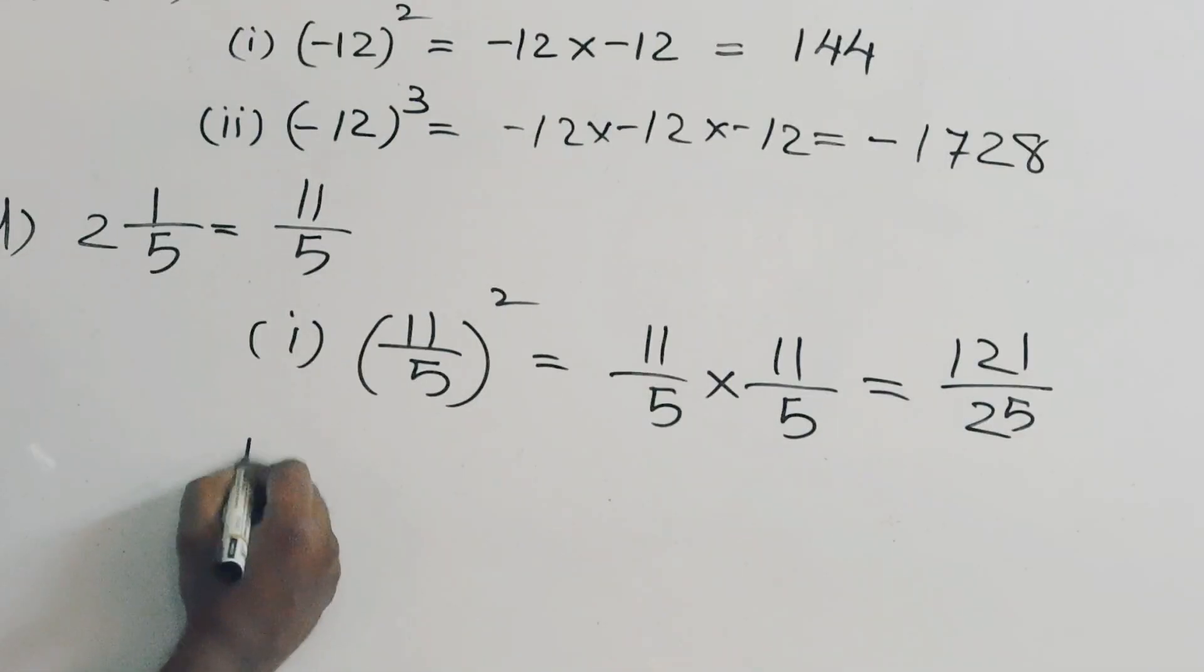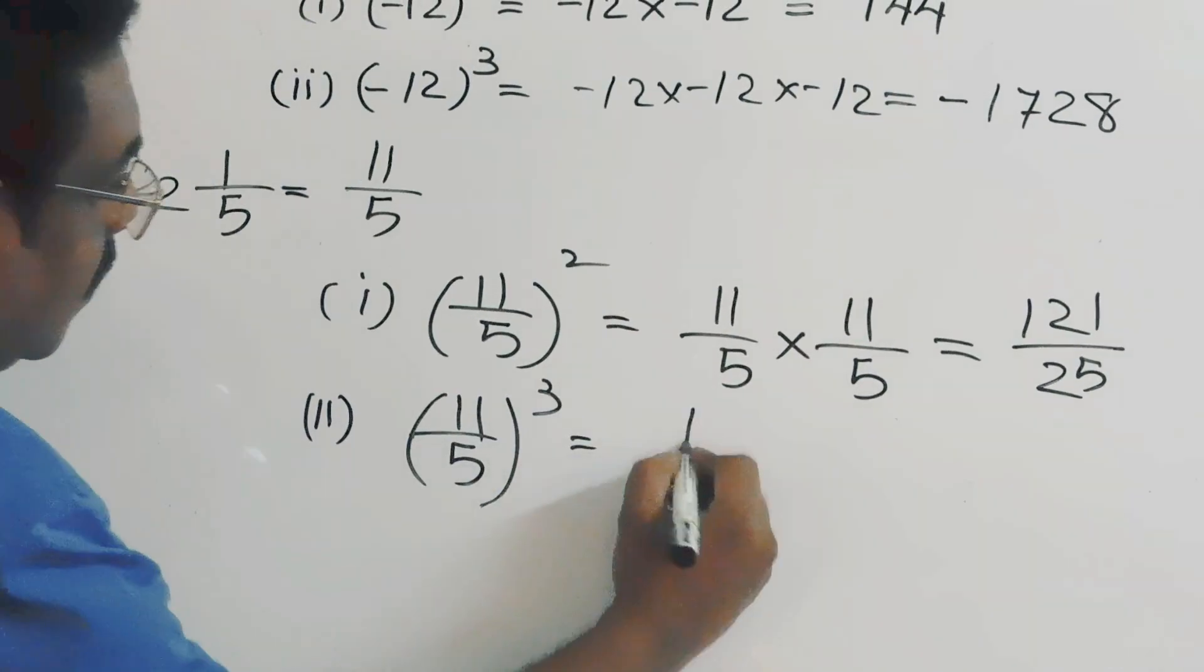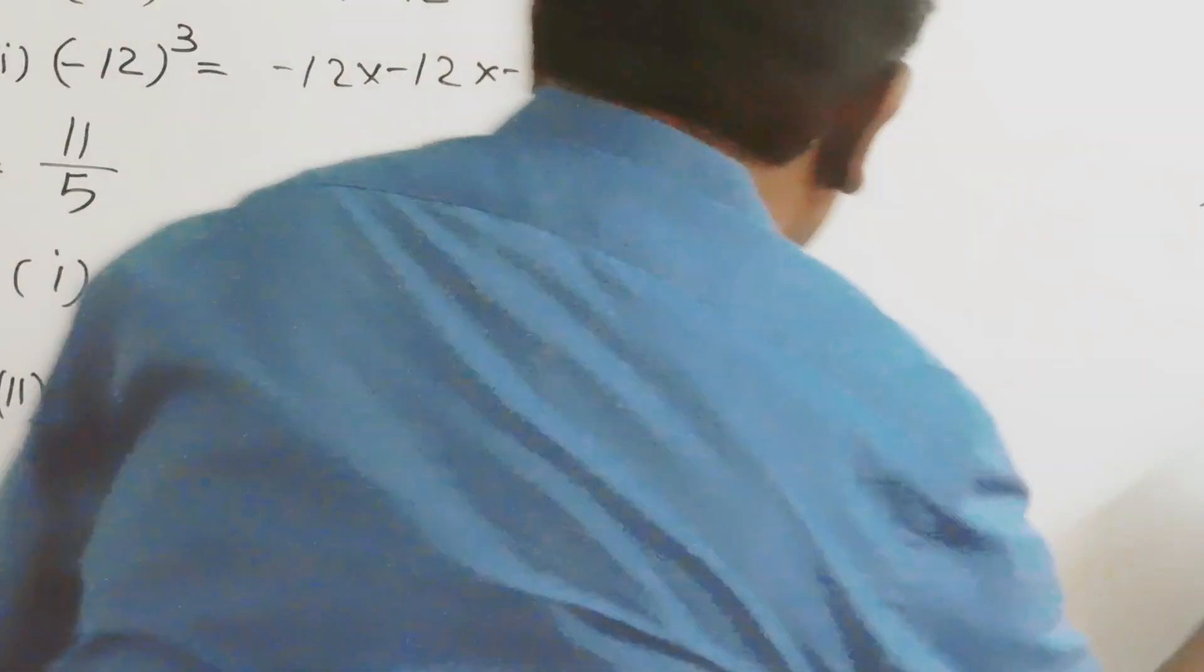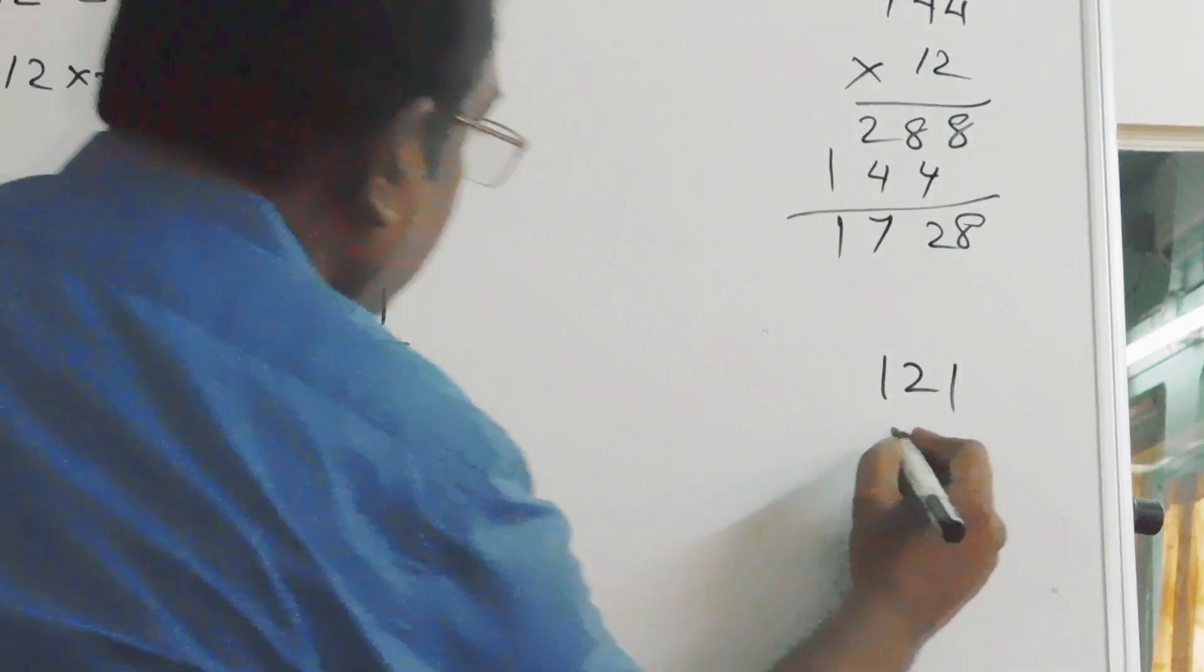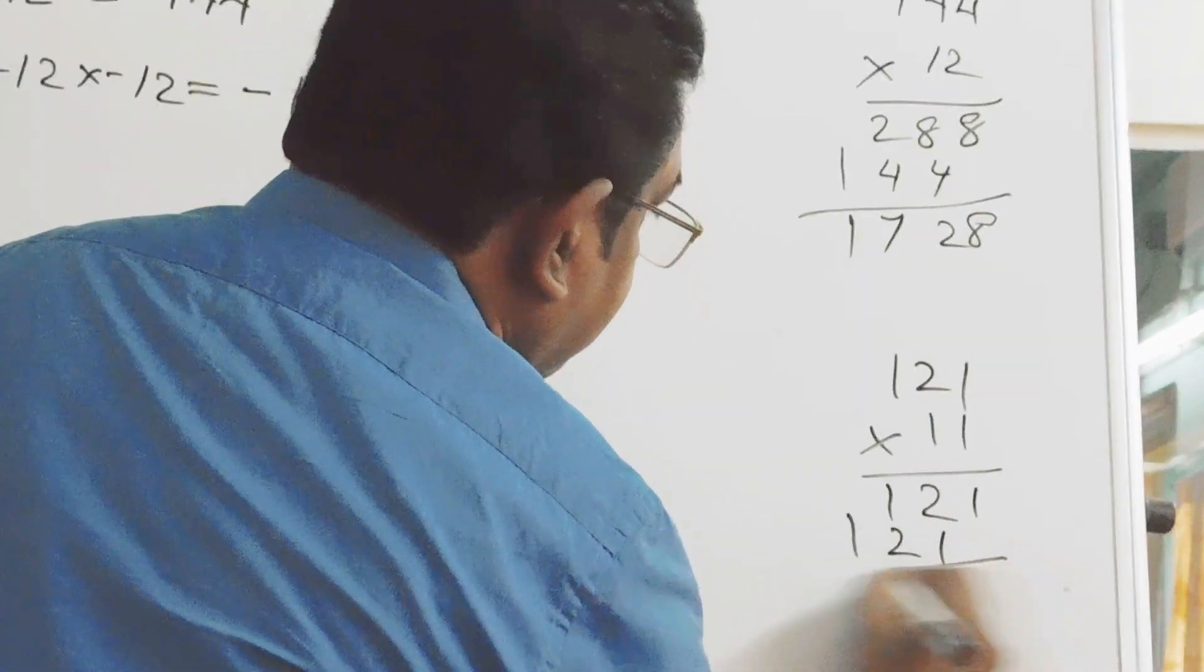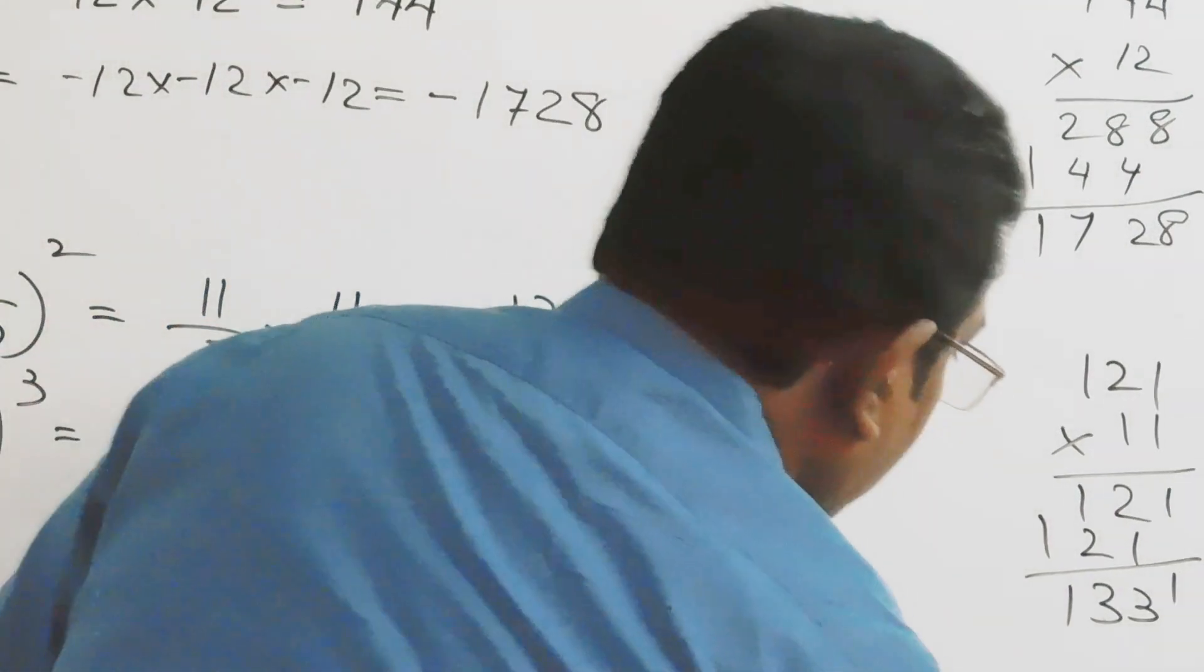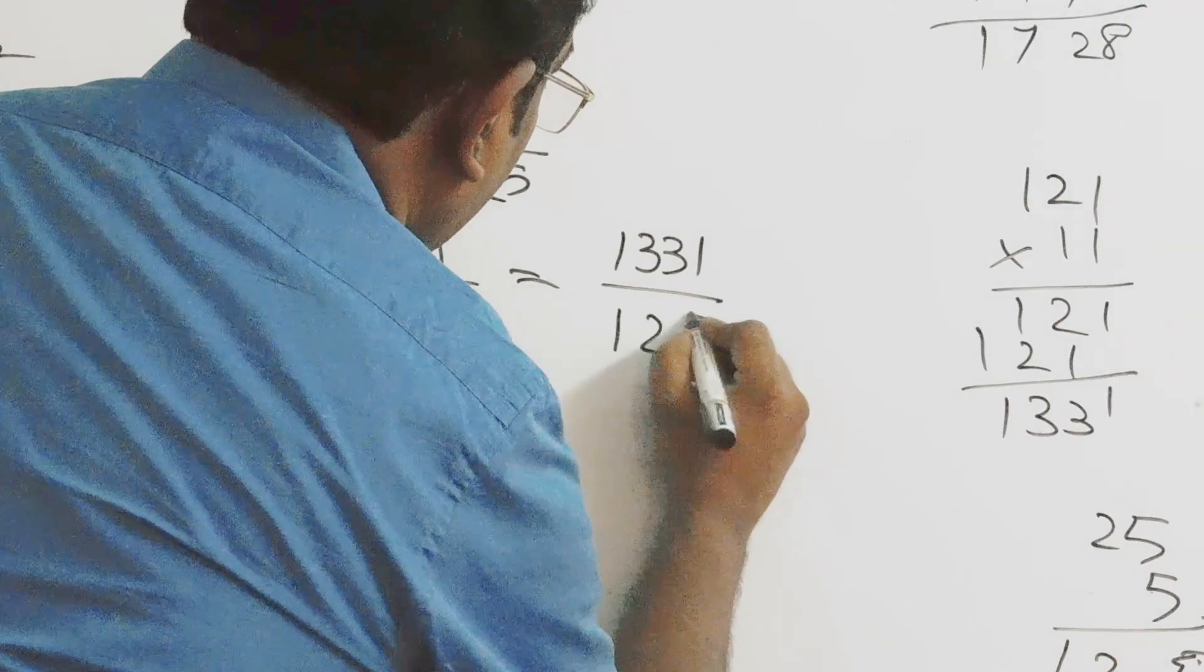Now, we will go for the cube of 11 by 5. Here, we will multiply 11 by 5 three times. 11 into 11 is 121, one more time. Here, we got the numerator 1331, and 25 into 5 is 125.